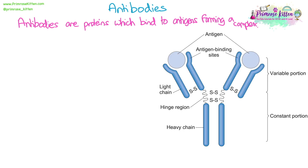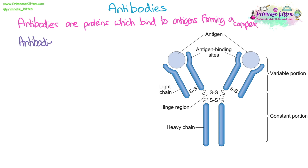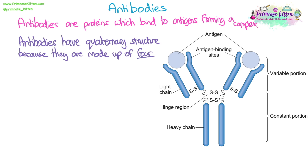Antibodies are proteins which bind to antigens forming an antibody-antigen complex. Antibodies have quaternary structure because they're made up of more than one polypeptide chain — actually four different polypeptide chains joined together by disulfide bridges.